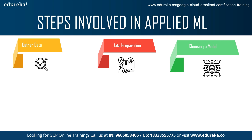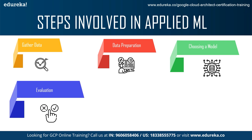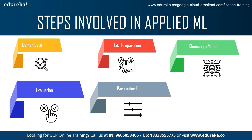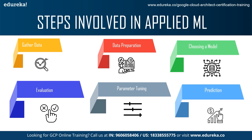You evaluate the different configurations available and choose what is best for your model according to your business needs. After that you go to parameter tuning, where you can fine-tune your configurations so that you get the best possible prediction, since the aim is to get the highest accuracy. The final part is the prediction part, which tells us how accurate our machine learning model is — the higher the prediction, the better the learning capability of the model.